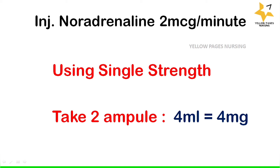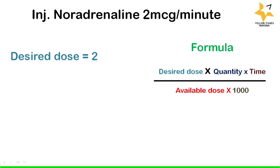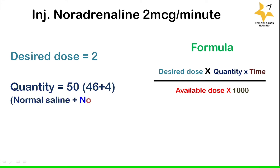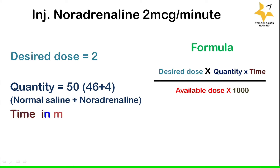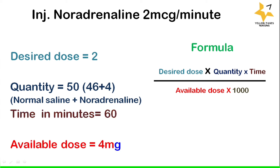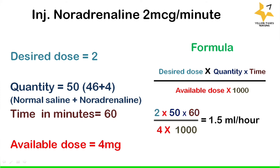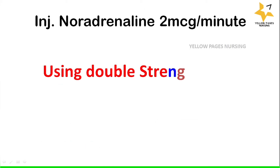Applying the formula for single strength: desired dose = 2, quantity = 50 ml (that is 46 ml of normal saline plus 4 ml of noradrenaline), time in minutes = 60, available dose = 4. Working through the calculation gives the answer: 1.5 ml per hour.